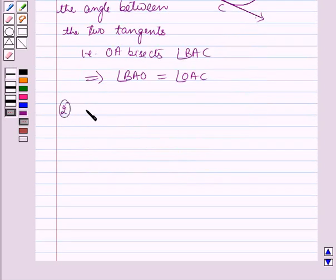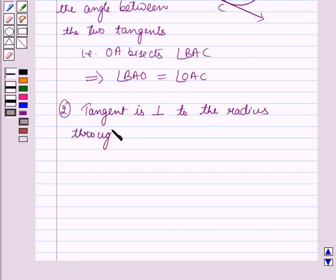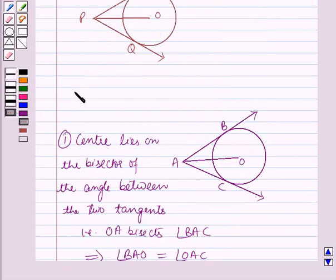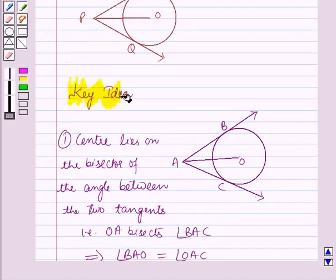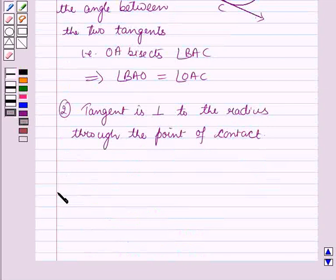which implies angle BAO is equal to angle OAC. Secondly, the tangent is perpendicular to the radius through the point of contact. Now these results will work out as a key idea for solving out this question. And now we will start with the solution.